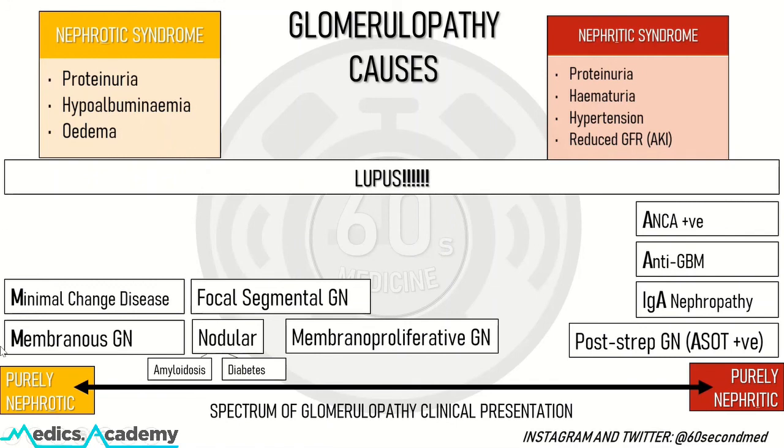And finally, don't forget lupus, which can present as any type of glomerulopathy — so as purely nephrotic, purely nephritic, or as a mixed picture as well. That concludes a quick presentation on glomerulopathies.